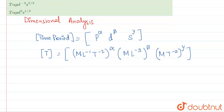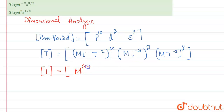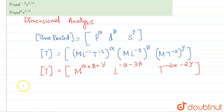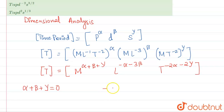Comparing all quantities, we write M, L, and T terms together. We get: M to the power (alpha + beta + gamma), L to the power (minus alpha minus 3 beta), and T to the power (minus 2 alpha minus 2 gamma). So the three equations are: alpha + beta + gamma = 0, minus alpha minus 3 beta = 0, and minus 2 alpha minus 2 gamma = 1.